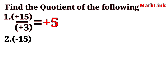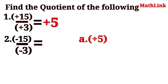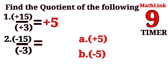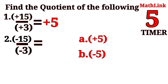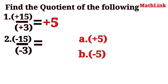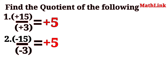Number 2: Negative 15 divided by negative 3 is equal to? Letter A: Positive 5. Letter B: Negative 5. The correct answer is letter A, positive 5 — positive sign because the two integers have the same sign.